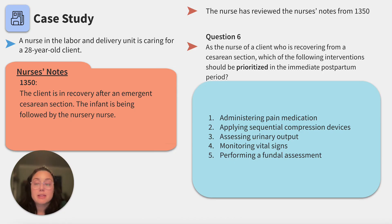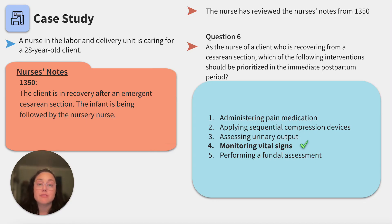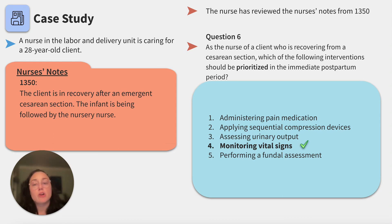Assessing vital signs will be the priority nursing intervention for clients recovering from a cesarean section — something so simple from fundamentals can be life-saving. The client has had a major hemodynamic shift with delivery and a surgical procedure, and vital signs can reveal early signs of hemorrhage or malignant hyperthermia. Administering pain medication is key for postpartum healing but wouldn't indicate hemodynamic trends. Applying sequential compression devices prevents blood clots but wouldn't be prioritized over frequent post-op vital signs. Assessing urinary output monitors fluid balance but wouldn't show immediate post-op changes.